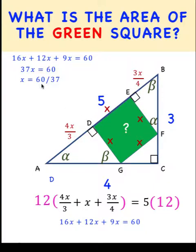So the length of the side of the green square is x equals 60 over 37. And so we can now find the area. We just have to square x.